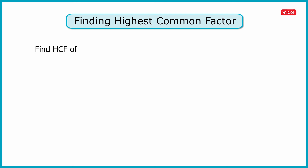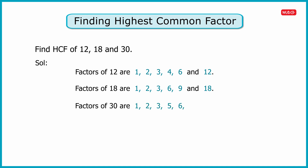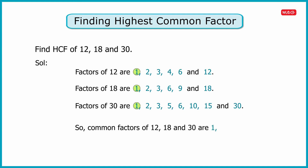Find the HCF of 12, 18, and 30. Let us first write the factors of all three numbers. Factors of 12 are 1, 2, 3, 4, 6, and 12. Factors of 18 are 1, 2, 3, 6, 9, and 18. And factors of 30 are 1, 2, 3, 5, 6, 10, 15, and 30. Here it is clear that the common factors of 12, 18, and 30 are 1, 2, 3, and 6, and the greatest among them is 6.